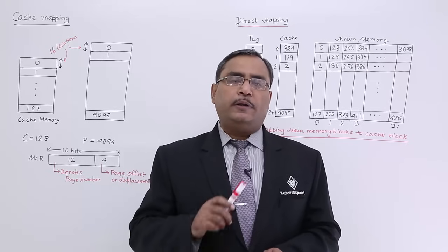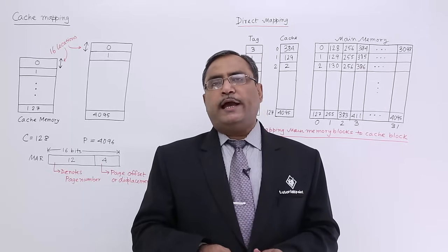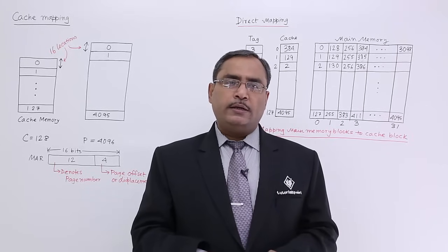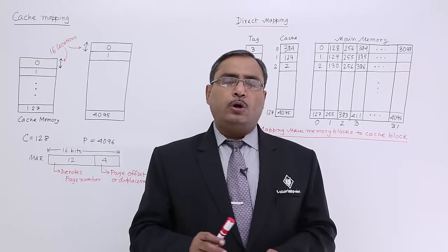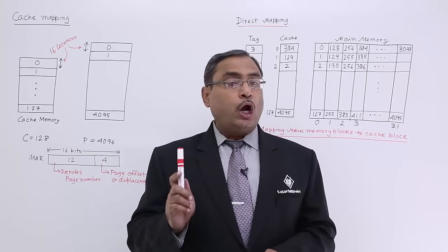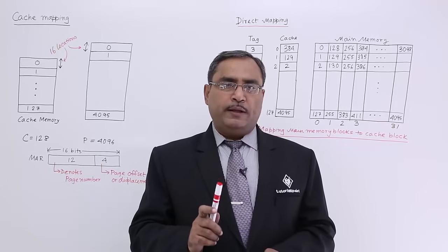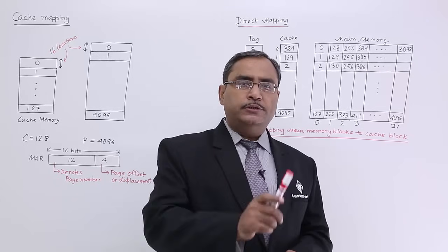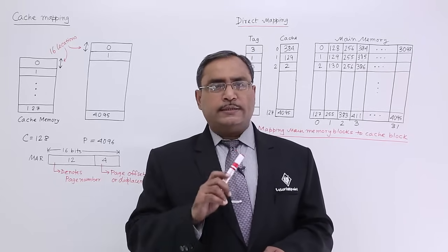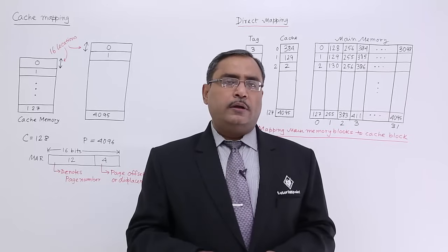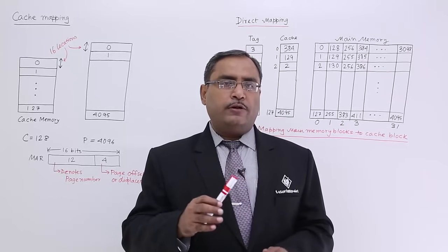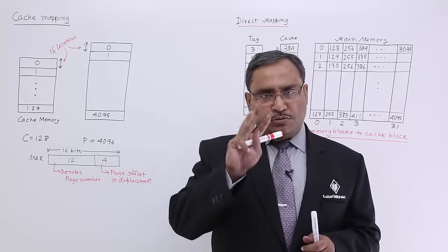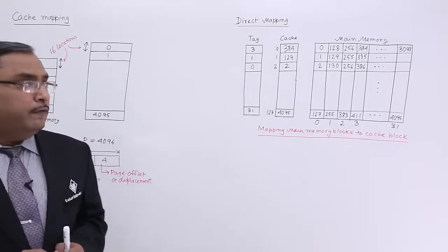The main point of concern in this video session is cache memory mapping. Cache memory mapping means how the main memory data will get mapped onto the cache memory — it is not moved, it is copied. The data remains in the main memory and its replica gets dumped onto the cache memory. How this can be done can be categorized into three different categories: cache mapping can be of three types.